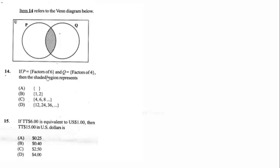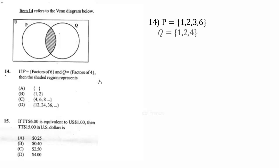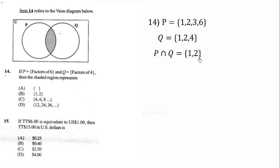The number of subsets is equal to 4 in the next problem. We have P equals factors of 6 and Q equals factors of 4, and the shaded region represents P intersection Q. The factors of 6 are 1, 2, 3, 6 and the factors of 4 are 1, 2, 4. The elements in both sets — P intersection Q — are 1 and 2. Therefore the correct answer is B.